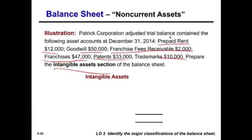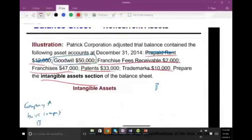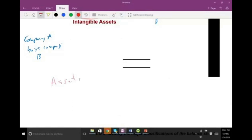Goodwill is the excess amount paid over the fair market value that we cannot assign to any purchased asset. We paid $500,000 — that's $150,000 more than what the company is worth. Why did we pay this? It could be because of the company's location, connections to the government, or customer base — things we cannot specifically assign to a single asset. So we call it goodwill: everything extra we paid that we cannot explain.